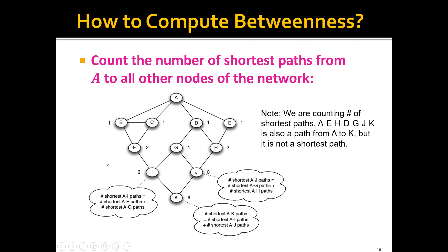For example, we can see that the number of shortest paths from A to F is 2, and the number of shortest paths from A to G is 1. Therefore it's easy to see that the number of shortest paths from A to I is actually the sum of A to F and A to G, which is 3. Now we can compute all the other numbers similarly.